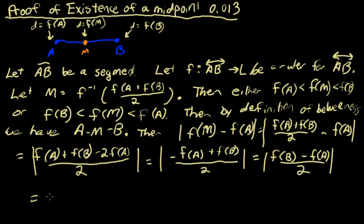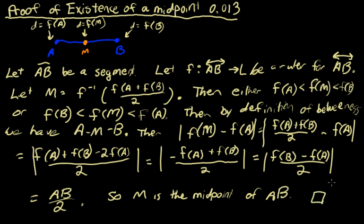Which is the same thing as (f(B) - f(A)) / 2, which is the same thing as AB / 2. So M is the midpoint of AB, and we're done.